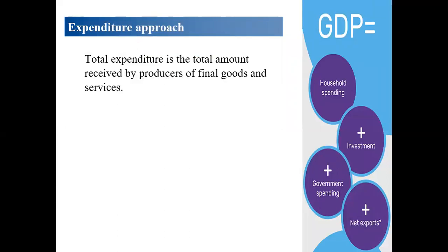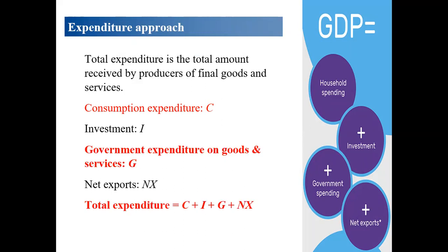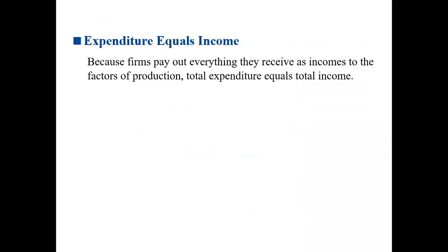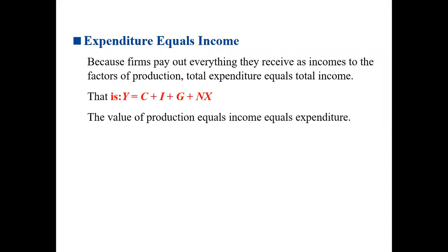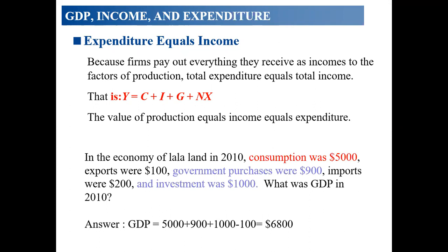The expenditure approach is represented as C + I + G + NX, the four components of GDP. Expenditure equals income because firms pay out everything they receive as income to factors of production. For example: consumption $5,000, government purchases $900, investment $1,000, and net exports $100 minus $200 equals minus $100. This represents a net outflow.